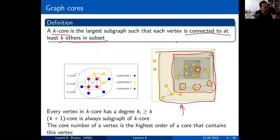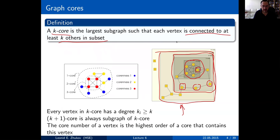We'll see a bunch of shells, one included into another, and eventually reach the very core that contains nodes of the highest degree. Every vertex in the core has degree greater than or equal to the core number, and the k+1 subcore is always a subgraph of the k-core.